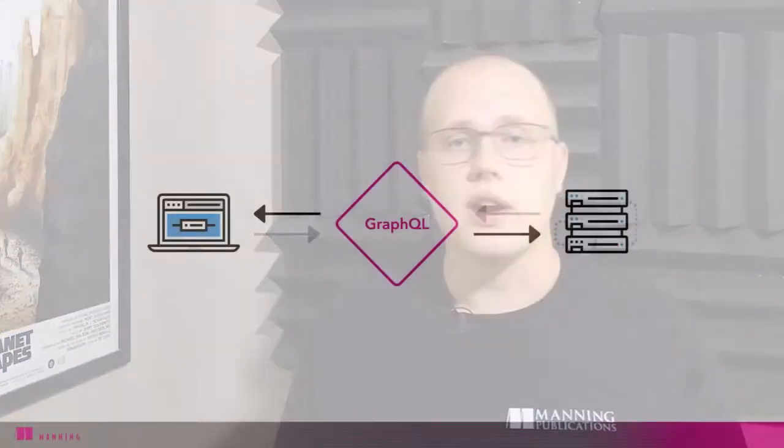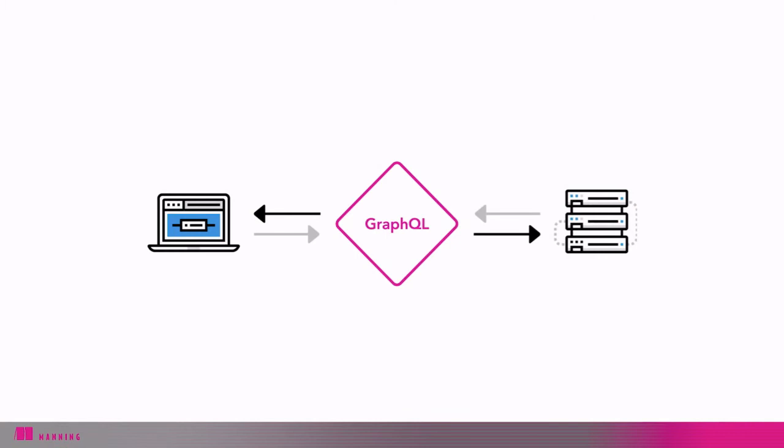Before we dive in too deep, let's quickly go over what GraphQL is. As mentioned earlier, GraphQL is a query language for APIs. What that means is that GraphQL is an application layer that serves as the middleman between your client and the server. Just as with REST, GraphQL takes queries from your client and returns a given response. However, unlike REST, GraphQL allows you to specify the exact resources that you want.